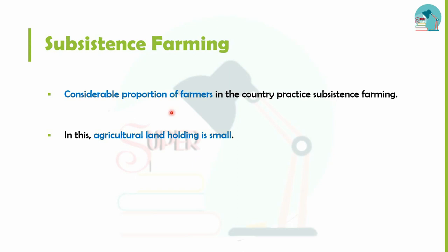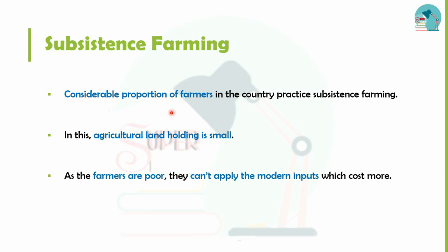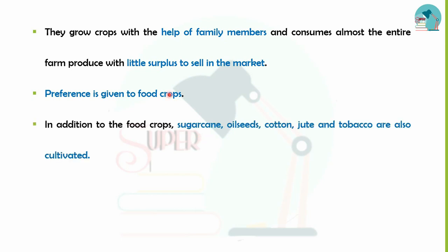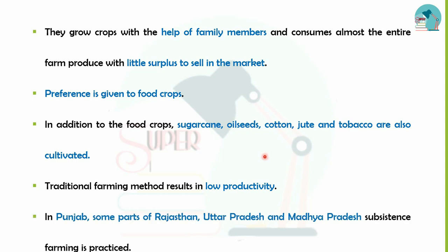In subsistence farming, agricultural land holding is very small and farm output is low. Family members help to grow crops, and seeds are sourced within the household. Food crops are grown, for example, sugarcane, oil seed, cotton, jute, and tobacco. Traditional farming methods are used with low productivity. This is practiced in Punjab, Rajasthan, Uttar Pradesh, and Madhya Pradesh.